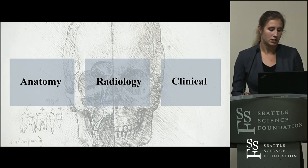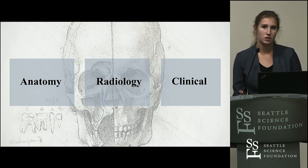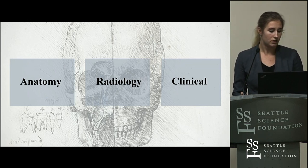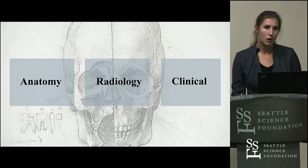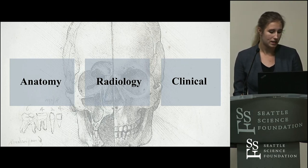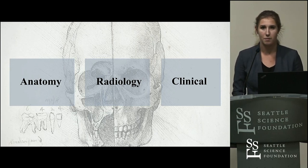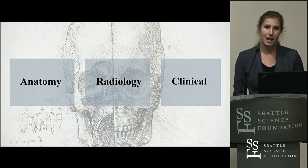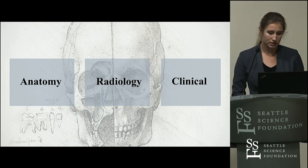Clinicians and surgeons treating patients with skull-based injuries and diseases should have detailed knowledge of the morphological variations that can occur in order to minimize complications. Today I present an important occipital bone variation — the paramastoid process — and I will be talking about its anatomy, radiology, and clinical consequences.